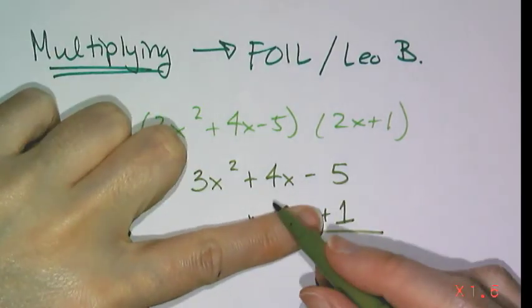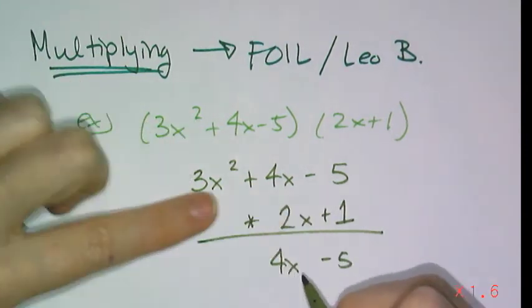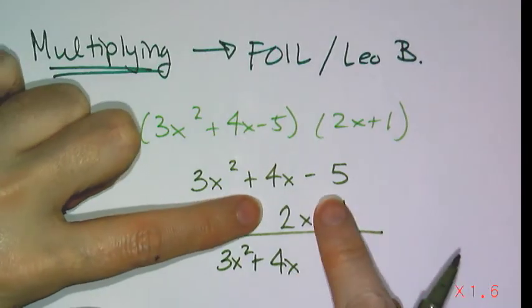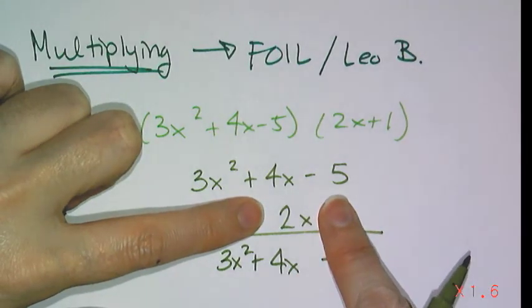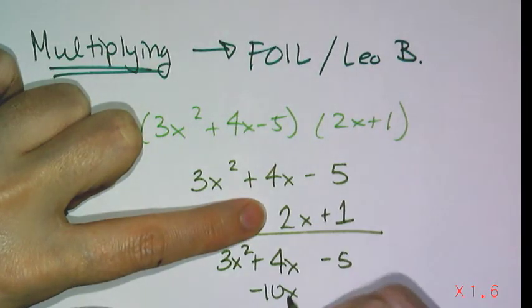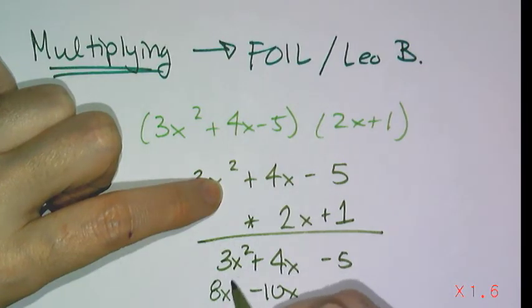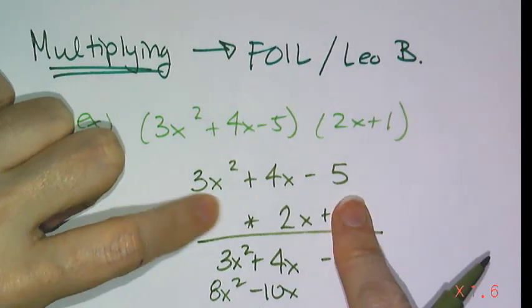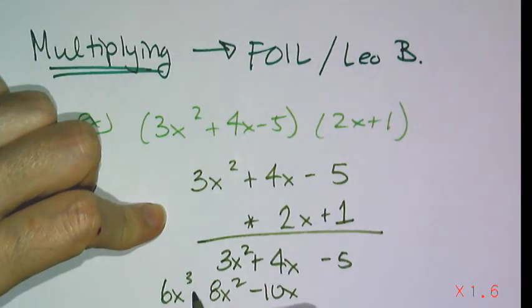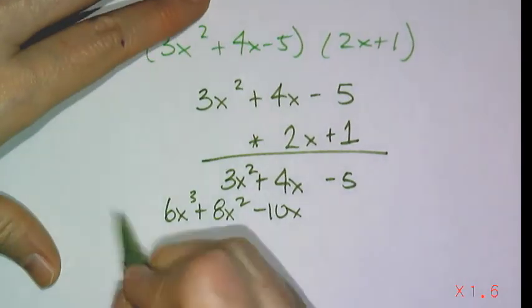so I get negative 5, 4x, and 3x squared. And then I multiply everything by 2x. So 2x times negative 5 is negative 10x. 2x times 4x is 8x squared. And 2x times 3x squared is 6x cubed, because I have one more x multiplied on. And now I add.